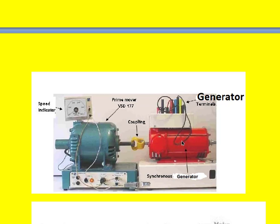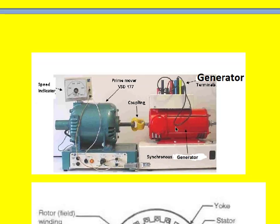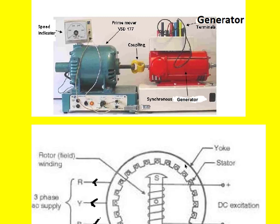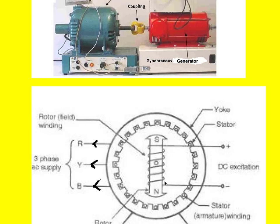Once the rotor starts rotating — because it is a salient pole rotor with DC supply connected to it — it automatically produces a rotating flux within the generator. That magnetic field cuts the stator conductors. This is the salient pole rotor; here I took a two-pole salient pole rotor for convenience. Because DC supply is given, we find a fixed south pole and north pole.